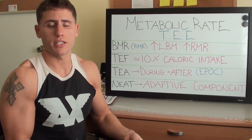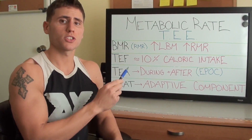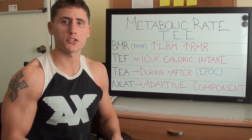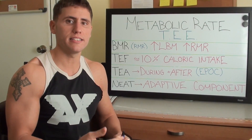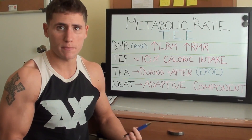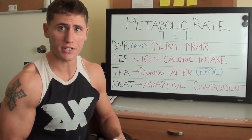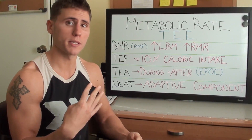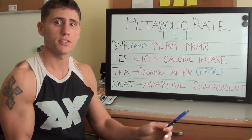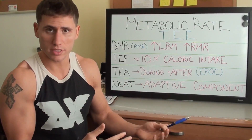So we have metabolic rate. You hear calories in versus calories out. We're going to start off talking about the TEE, also referred to as the TDEE — Total Daily Energy Expenditure — how many calories your body requires. That's comprised of four components: your BMR, your TEF, your TEA, and your NEAT, which we'll discuss.